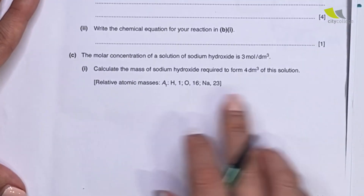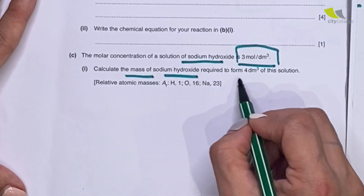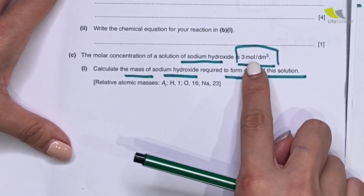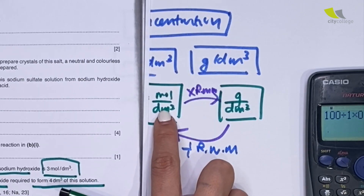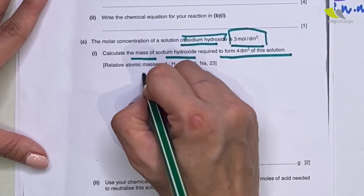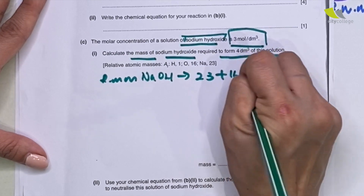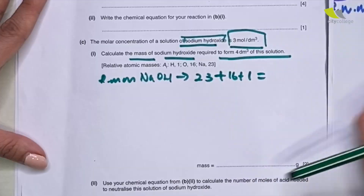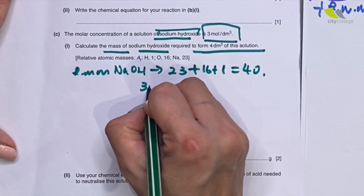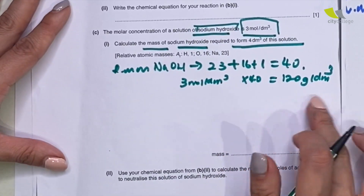The last question is from the 2019 paper. The molar concentration of sodium hydroxide is 3 mol/dm³. Calculate the mass of sodium hydroxide required to form 4 dm³ of this solution. They ask for mass but give mole per dm³. To convert mole per dm³ to gram per dm³, multiply by RMM. RMM of NaOH: 23 + 16 + 1 = 40. So 3 mol/dm³ × 40 = 120 gram per dm³.